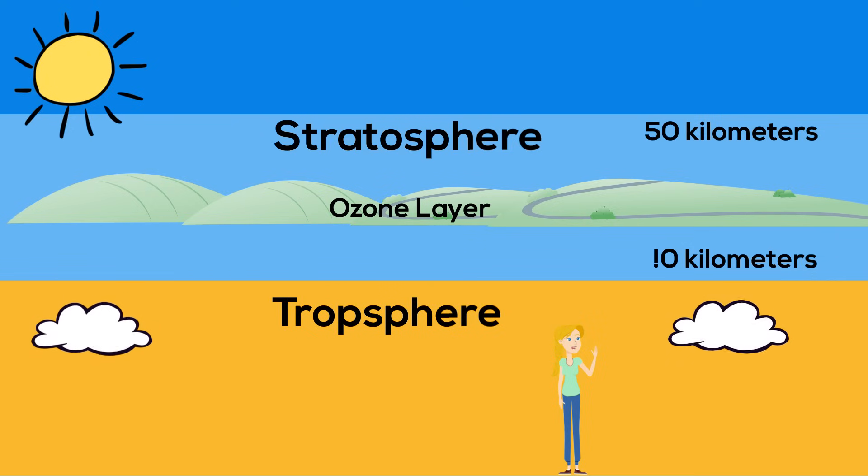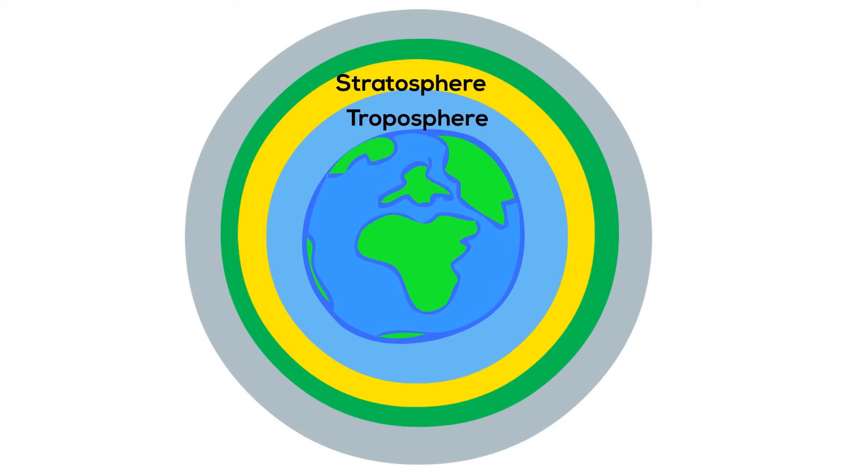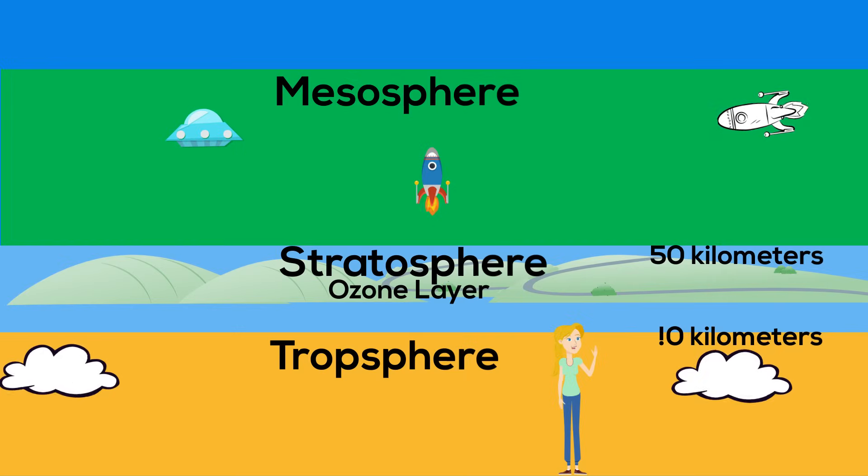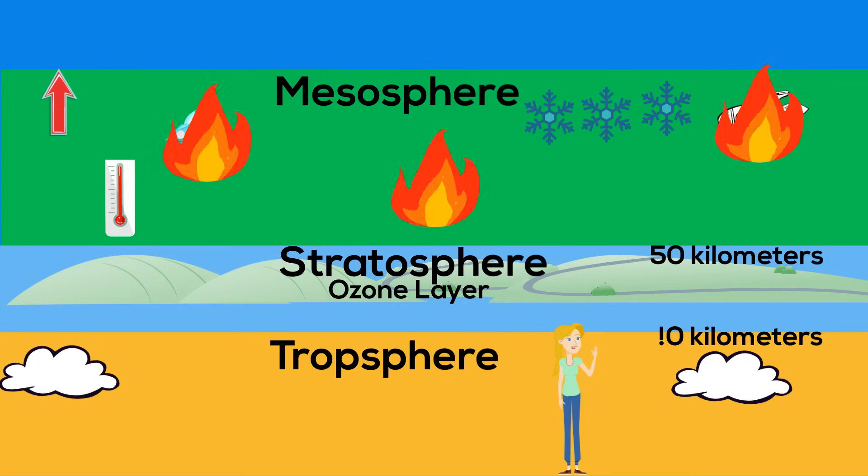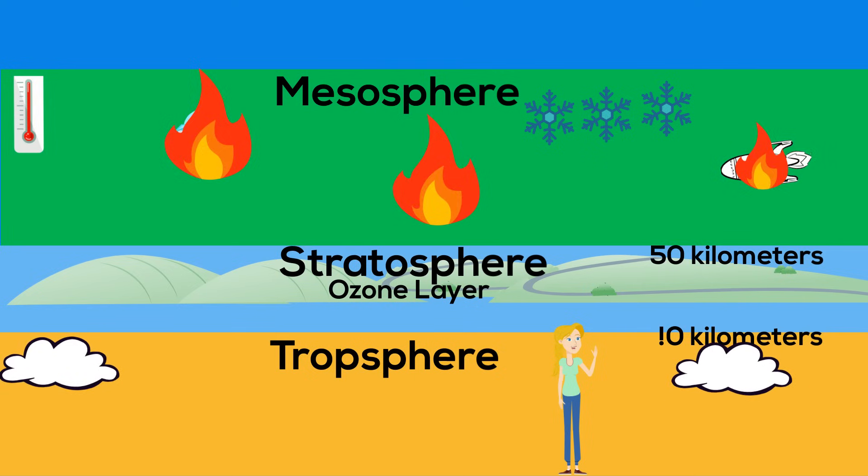At 50 kilometers above the Earth we move to the next layer called the mesosphere. The mesosphere gets colder as you go up. In fact it is the coldest layer and can have temperatures as low as negative 90 degrees Celsius. The mesosphere protects the Earth from space junk because the ice crystals burn up the space junk as it moves through it. It extends to about 80 kilometers high.